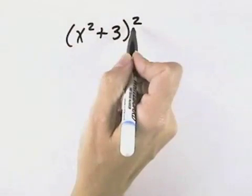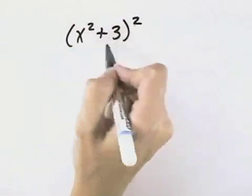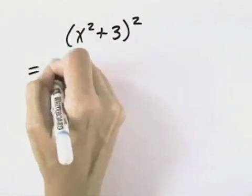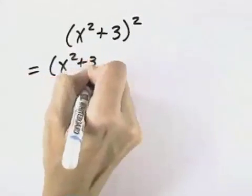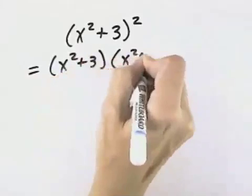Here we have a binomial squared. We need to be careful. That doesn't mean to square the individual terms. That actually means we have x squared plus 3 times itself. That's what it means to be squared.